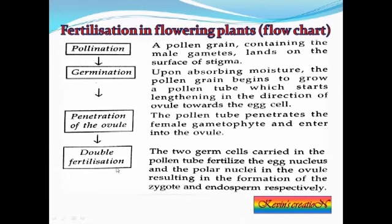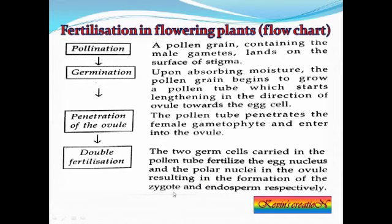There is a term called double fertilization, which you will learn in higher classes. Briefly, the pollen tube carries two germ cells into the ovule, which fertilize the egg nucleus and polar nuclei, forming a zygote and endosperm — hence the term double fertilization. For now, what is important to know is that male and female gametes fuse together to produce a zygote.